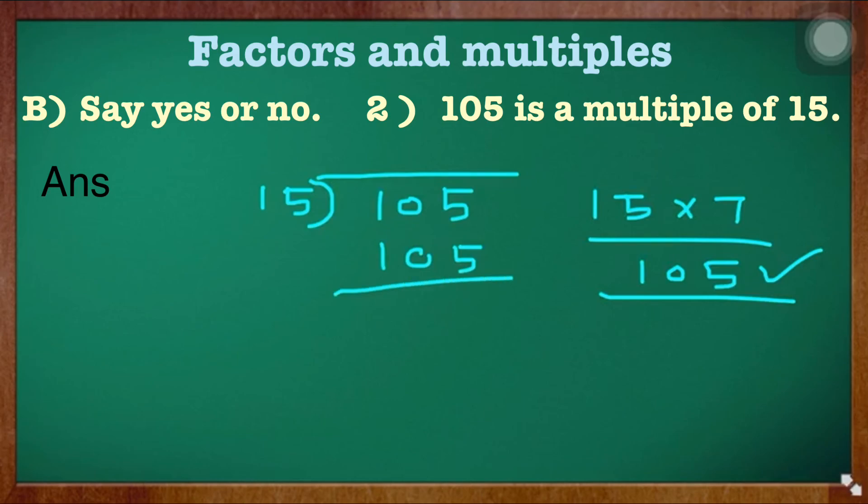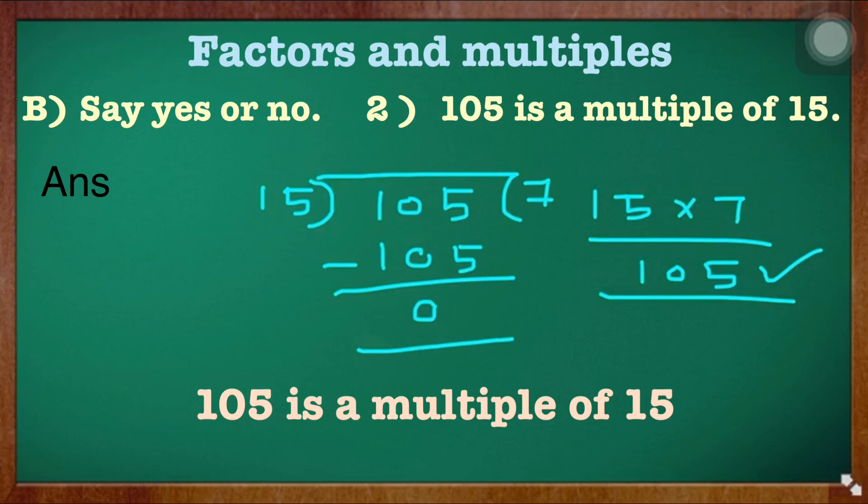Here also, whenever we get remainder 0, then 105 is the multiple of 15.